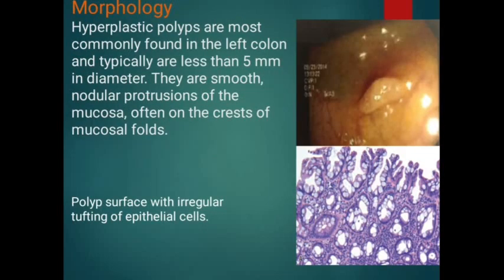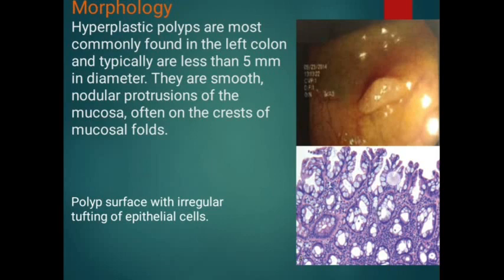Hyperplastic polyps are located predominantly in the left colon at the rectosigmoid area. Morphology: looking at the mucosal surface, most of the surface area is uniform; however, there is an area showing smooth thickening of the mucosa — this is a hyperplastic polyp. It is sessile, not pedunculated. Histologically, the appearance shows irregular serrated tufting of epithelial cells like saw teeth, narrow elongated crypts, and predominant goblet cells.